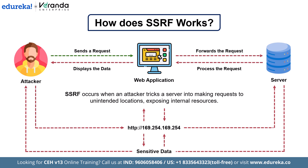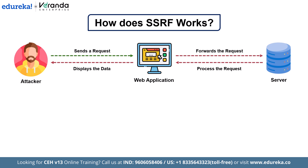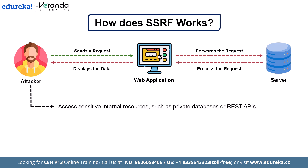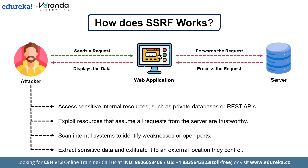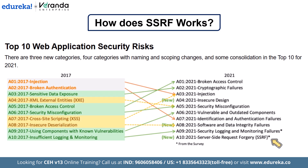A common target is the metadata service in cloud servers. These services often store sensitive information such as configuration details or authentication keys. The server, trusting the user's input, processes this malicious URL and makes a server-side request to the specified resource, unknowingly carrying out the attacker's commands. Through this manipulation, an attacker can access sensitive internal resources like private databases or REST APIs, exploit resources that assume all server requests are trustworthy, scan internal systems for weaknesses or open ports, and extract sensitive data to exfiltrate it externally. SSRF is listed among OWASP's top 10 vulnerabilities, highlighting how severe and common these attacks are.